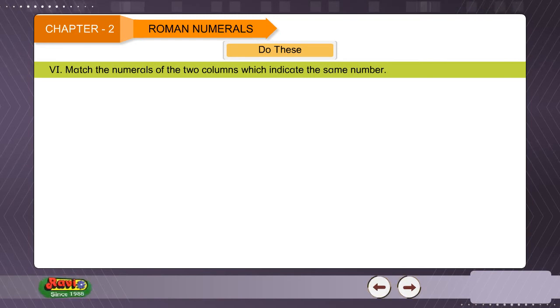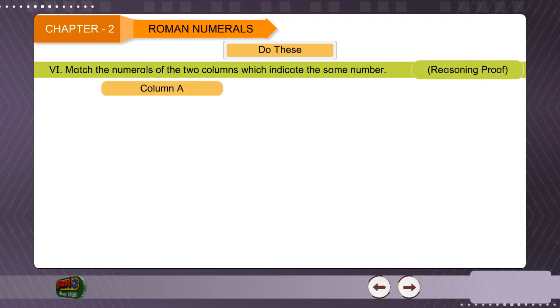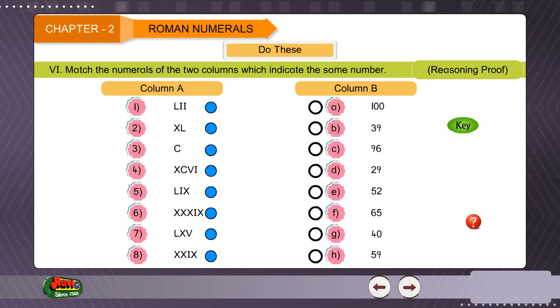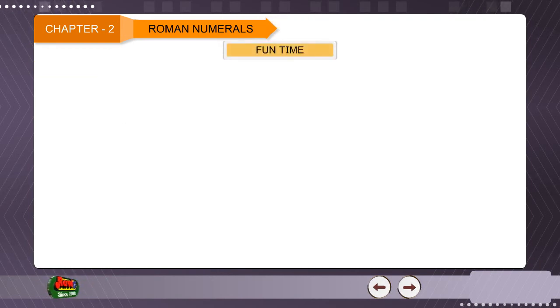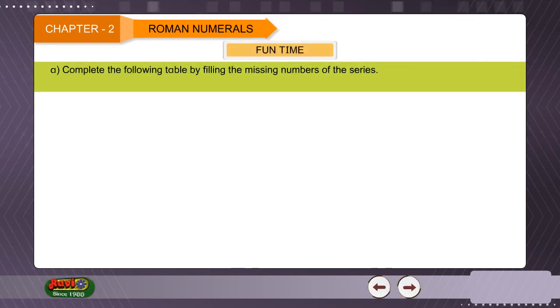6. Find the numerals of the two columns which indicate the same number. Column A, Column B. Fun time: Complete the following tables by filling the missing numbers of the series.